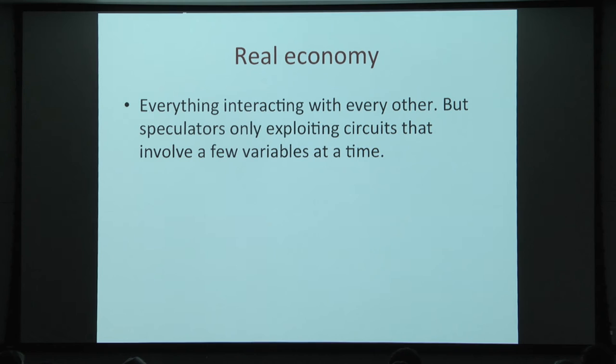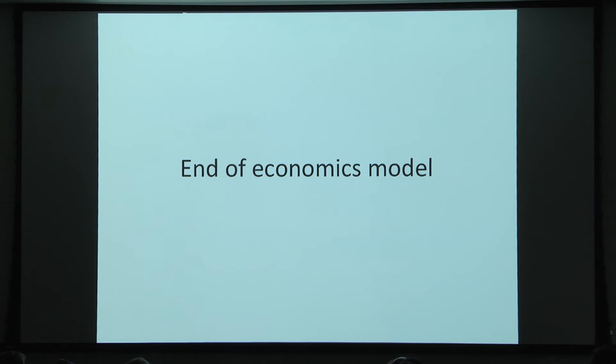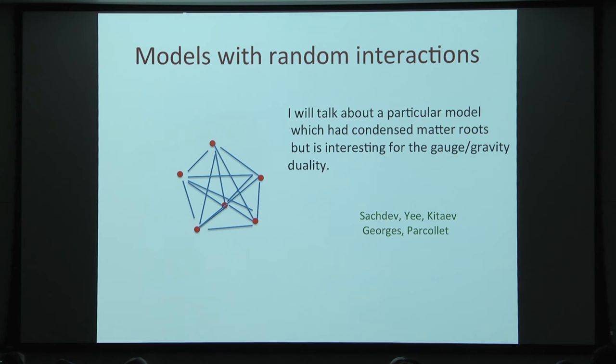In the real economy, you have everything interacting with everything else. But it might be that speculators only exploit short circuits, and in some cases this leads to interesting behavior, as we'll see later. This is my attempt to connect the first part of the talk with the second part, which has random interactions but involving only a few variables at a time. That was the end of the economic model — I hope you enjoyed it.